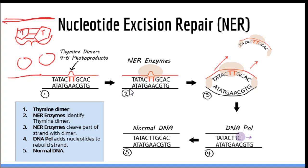Once a specialized NER enzyme finds a thymine dimer or other helix-disturbing lesion, it will bind to it and recruit other NER enzymes. These new enzymes open up the DNA double strand and cleave a 25 to 50 nucleotide strand of DNA containing the lesion. Here we can see that the strand containing the thymine dimer is cut away and removed, leaving a piece of DNA that is single-stranded. Once the strand has been removed, DNA polymerase comes in and rebuilds the strand with new nucleotides, and you are left with normal healthy DNA.